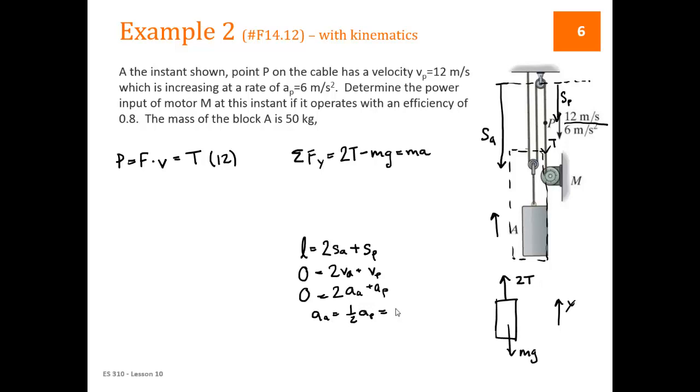So AA is one half of AP in the opposite direction of it. AP is 6, so AA is 3. So we can come back up here and solve for T is M times 3 plus M times 9.81 divided by 2. M is 50 kilograms. Plug that in and we get a tension of 320 newtons. Now we have the tension. We can plug it in over here and get the power. This is the power out of the motor, right? This is the power we're seeing in the system. So it's coming out of the motor.